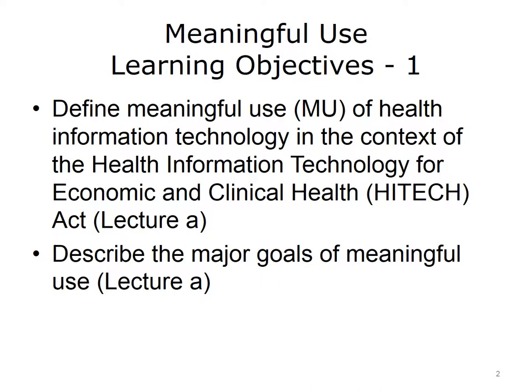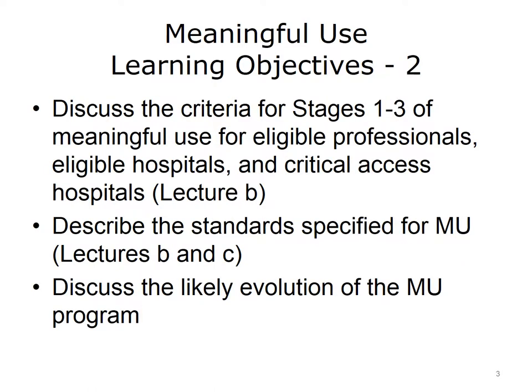The objectives for this unit, Meaningful Use, are to: define Meaningful Use, or MU, of Health Information Technology in the context of the Health Information Technology for Economic and Clinical Health, or HITECH, Act; describe the major goals of Meaningful Use; discuss the criteria for Stages 1 through 3 of Meaningful Use for Eligible Professionals, Eligible Hospitals, and Critical Access Hospitals; describe the standards specified for Meaningful Use; and discuss the likely evolution of the Meaningful Use Program.